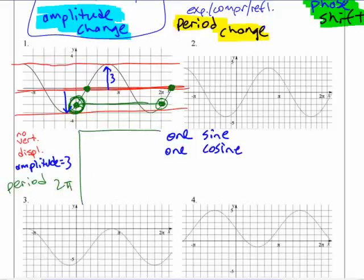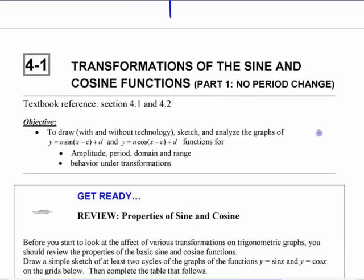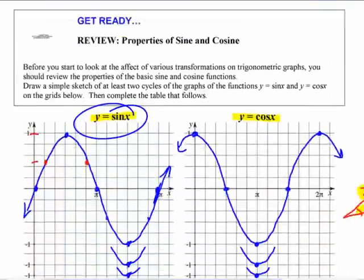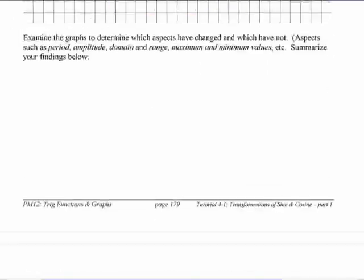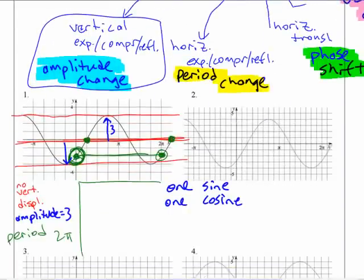The other way to know that is if you look at the title of this tutorial, it says no period change because we're saving that for later, but just to get us in good habits here. So the period is 2π, meaning it hasn't changed.